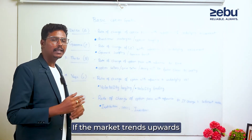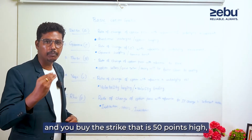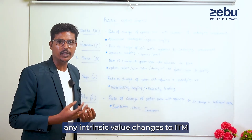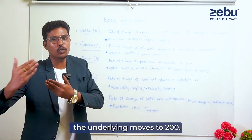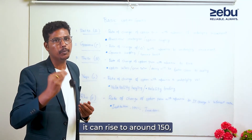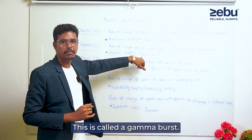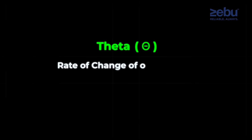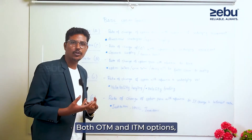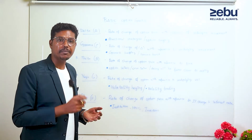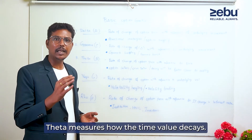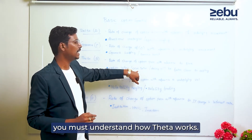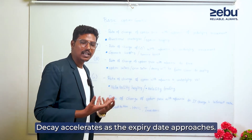Let's get started. The market is going to trend. If you have a strike at 200 points, then you have a Gamma burst. There is an ITM option. Now you have to buy a Gamma burst — this is pretty important. Theta is the rate of change of option price with reference to time. The option price is equal to intrinsic value plus time value.